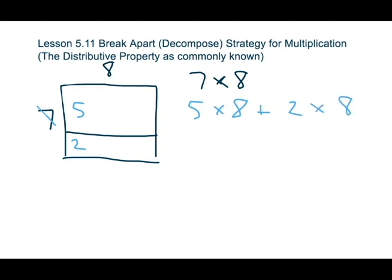You can see that this has distinct attributes of the distributive property. So five times eight is 40, plus two times eight is 16.